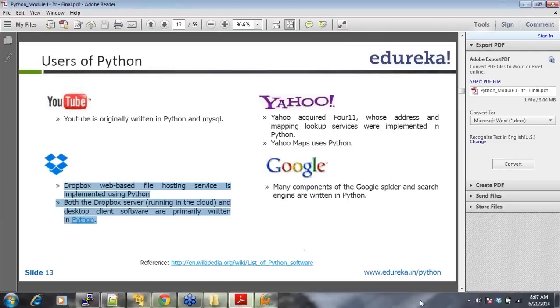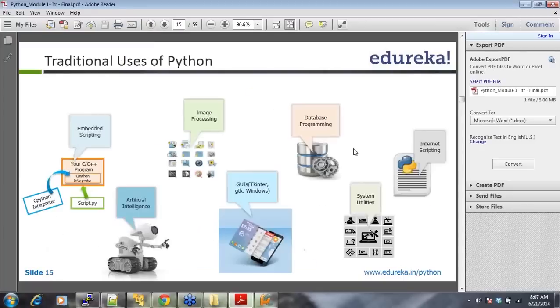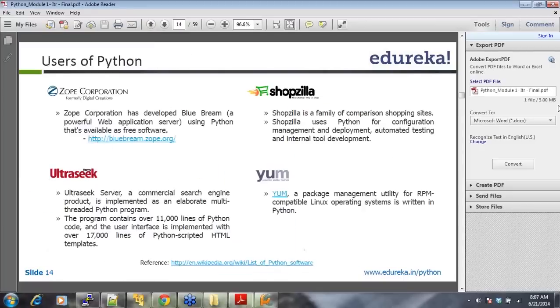Yahoo acquired 411 whose address and mapping lookup services were implemented in Python. Yahoo Maps uses Python again. Google, many components of Google's search engine are written in Python. The reason why people prefer Python is because it's easier to code. There are a lot of packages already available. People are contributing to it and hence, all of these job incorporation, UltraSeek, Shopzilla, almost all of these are using Python and there are many others which we have not mentioned here who are users of Python.